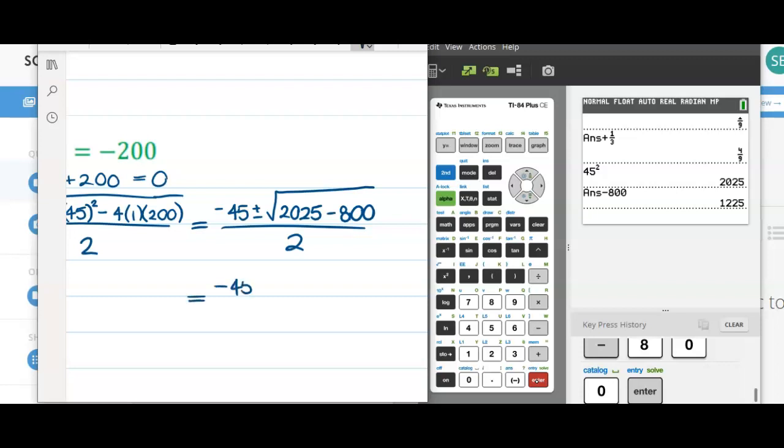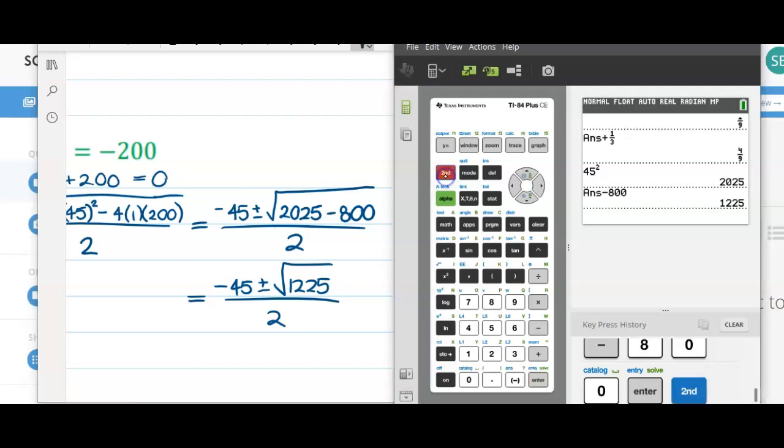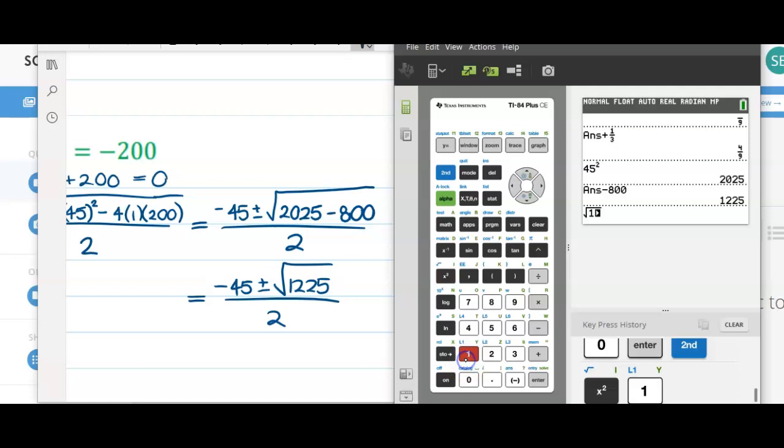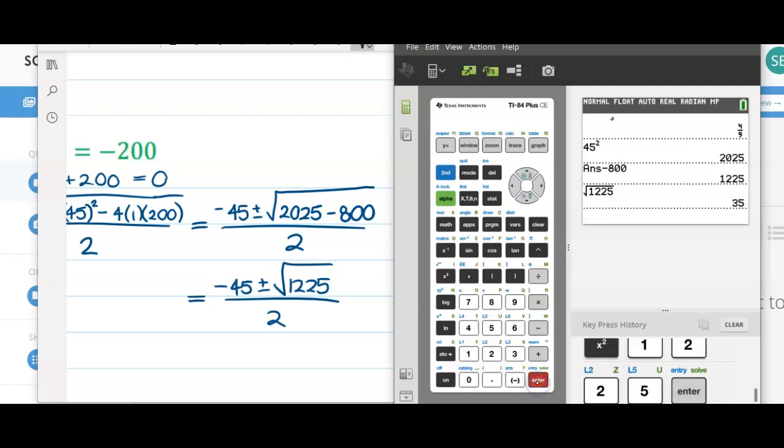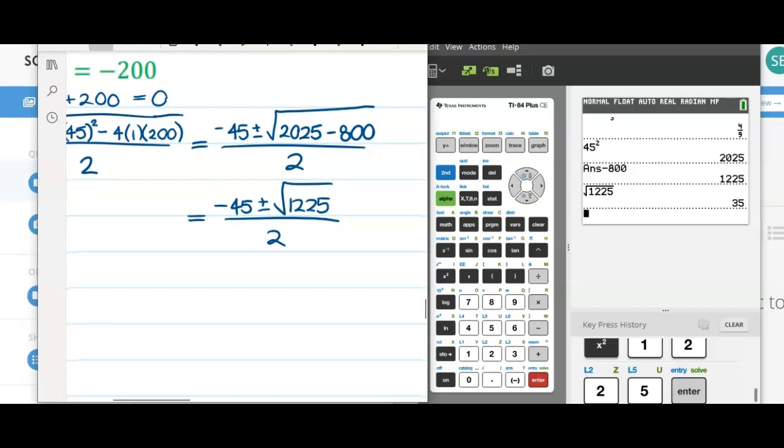So negative 45 plus or minus square root of 1225 all over 2. Let's try to take the square root of 1225. Oh, great. It's 35. That makes things much nicer for us.